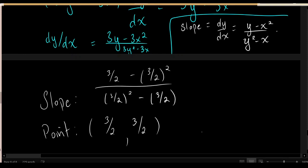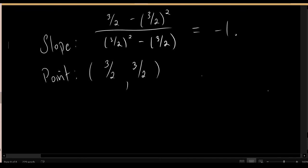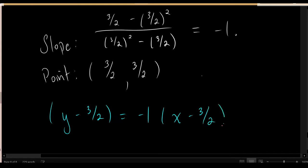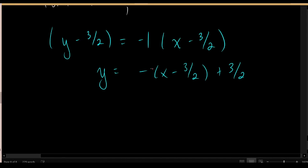Having found the slope of negative 1 and the point (3/2, 3/2) on the tangent line, we use point-slope form: y minus 3/2 equals negative 1 times (x minus 3/2). You're free to leave it like this, or simplify to y equals negative x minus 3/2 plus 3/2, or any other equivalent form.